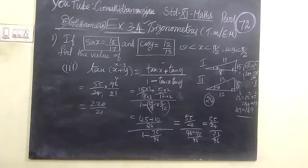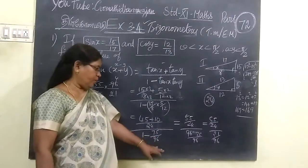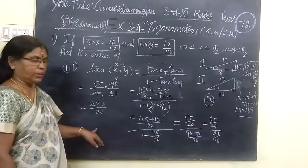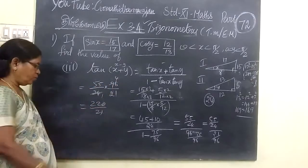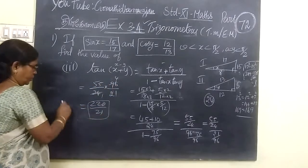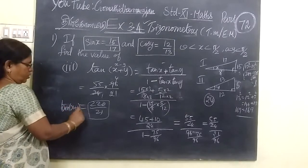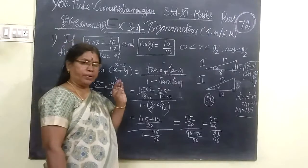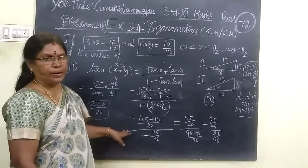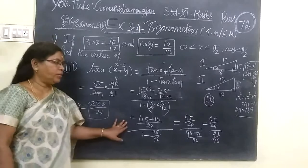So we are checking the answer in the textbook, the back side answer. 24 one time, 96 four times, so it is 20 by 21. This is tan of x plus y. So we will see in the next video. Thank you.